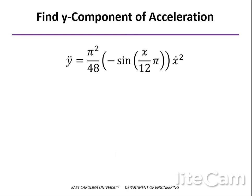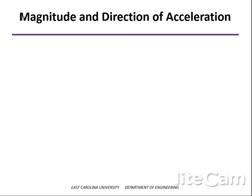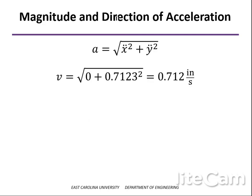Plugging in x equals 4 inches, we find that y-double-dot is in the negative y direction. So as the particle is moving upward at this point, it is slowing down. The magnitude is just the component in the y direction since the x component is zero, and the direction is downward.